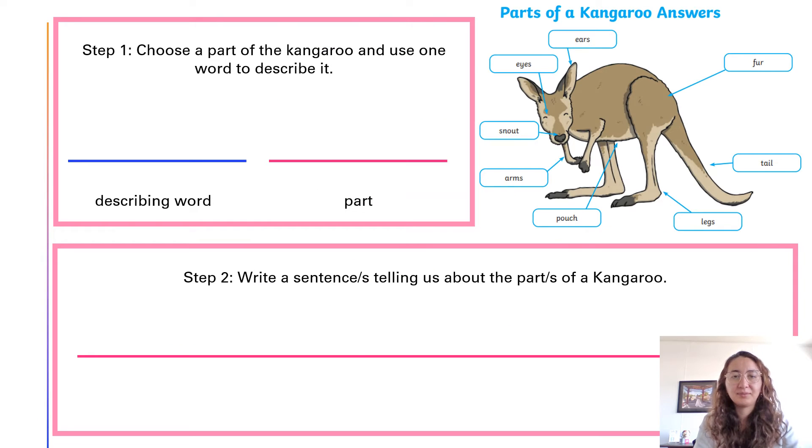Now we're going to describe one of those parts because we're using our adjectives. Remember describing words. So today I'm going to use the word tail. So I'm going to talk about the tail of the kangaroo. So I'll put part here, tail.